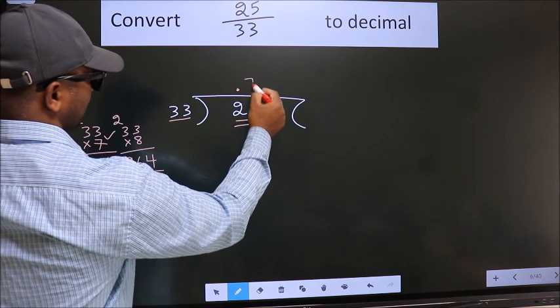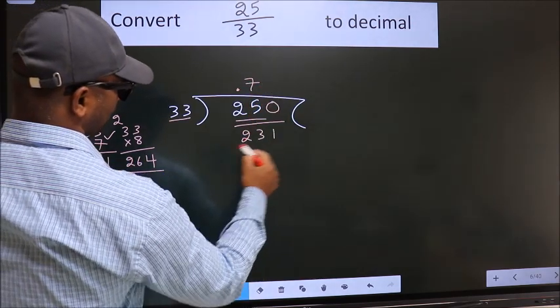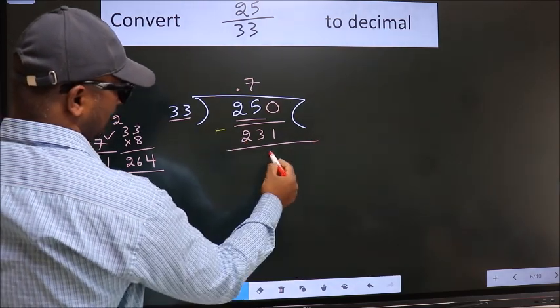So 7 times 33 is 231. Now we should subtract. We get 19.